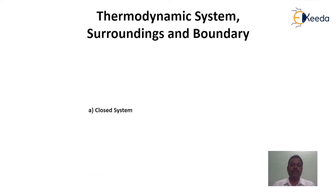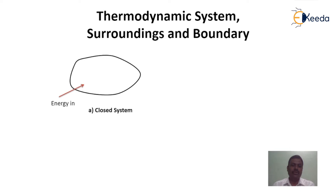The closed system can be graphically represented in this way. If this is the closed system boundary, there will be energy entering into the closed system across the system boundary and energy going out of the system across the system boundary. But here there will not be mass flow into or out of the system across the system boundary.